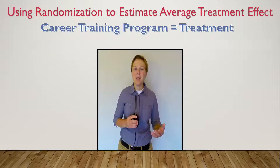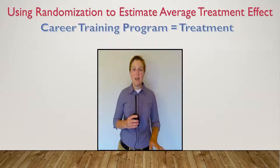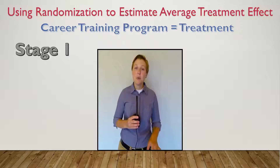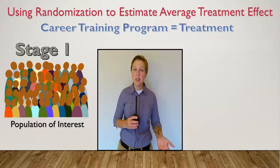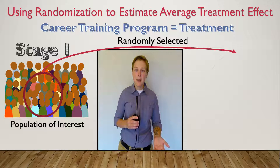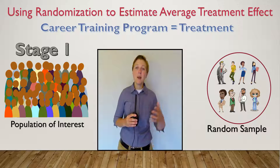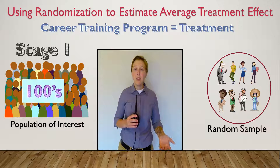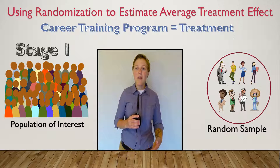There are a lot of ways that we use randomization to estimate average treatment effect. The simplest randomization scheme involves two stages. In the first stage, we randomly select members of a community or some population of interest to participate in our study. We do this because we want to generalize our results to the entire population of interest, which may be hundreds, thousands, or millions of people. Usually, it is not practical to observe outcomes on everyone in the population.